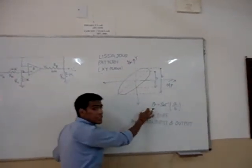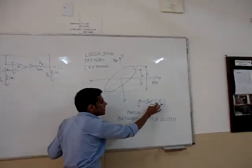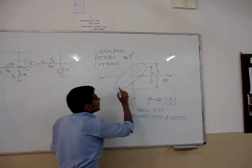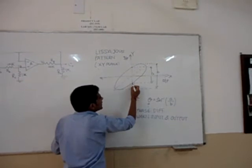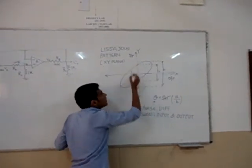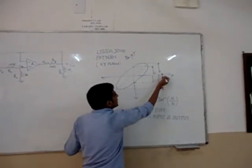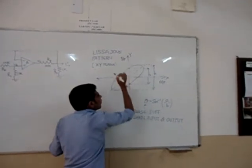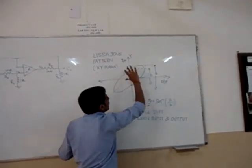The sine theta which depicts the phase difference is equal to sine inverse A upon B. Where A is the intersection of the Lissajous pattern with y axis and B is the maximum value of the Lissajous pattern on y axis.